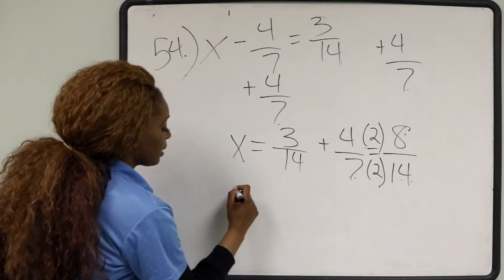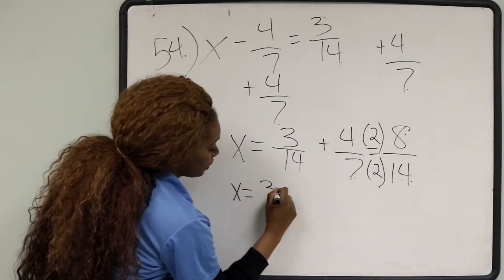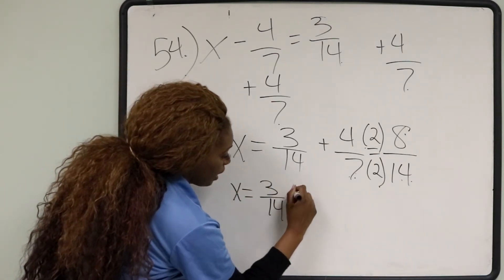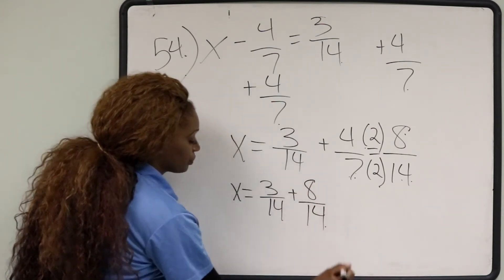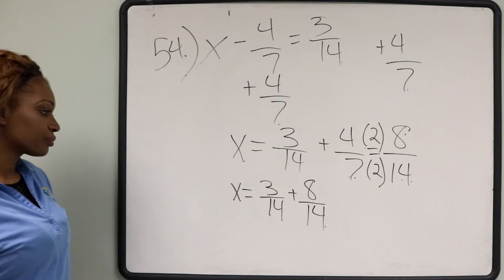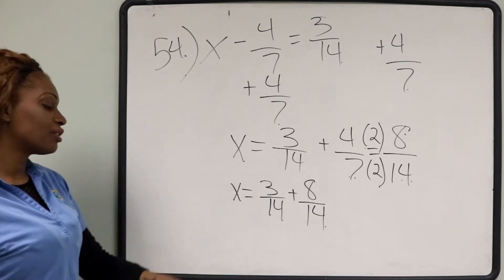So now, we have x equals 3 14ths plus 8 over 14. And we're simply going to add straight across.